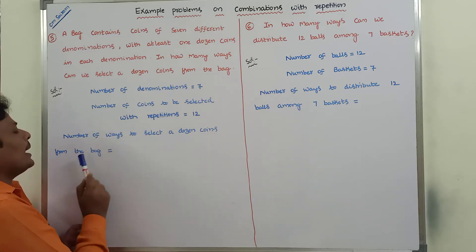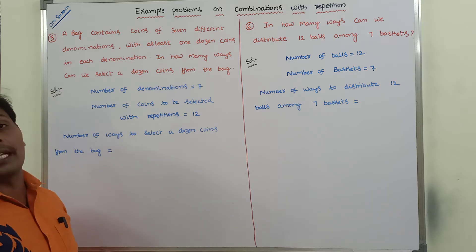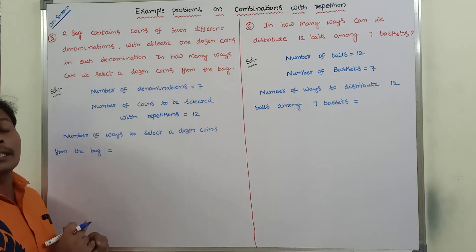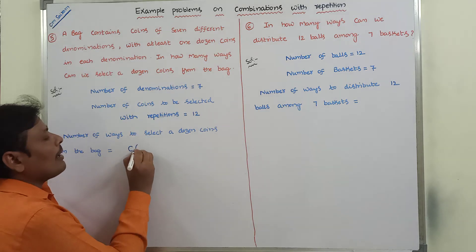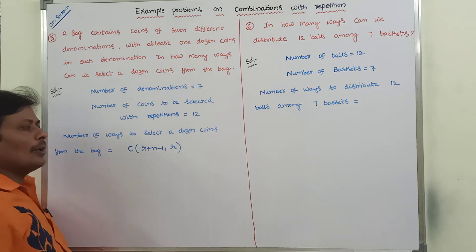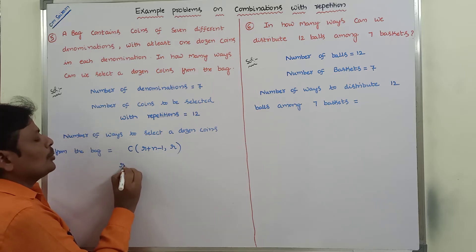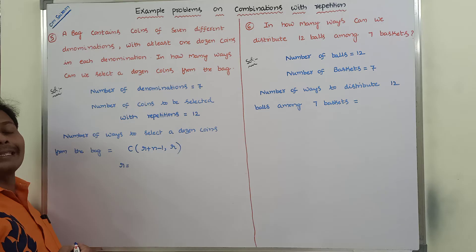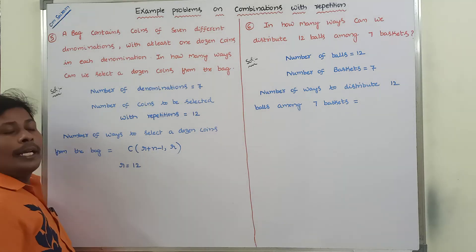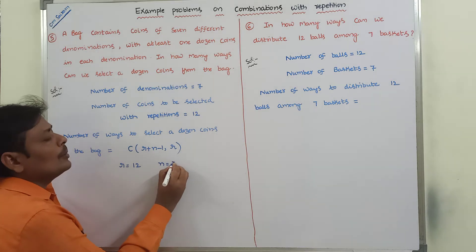Number of ways to select a dozen coins from the bag using combinations with repetition: the formula is C(n + r − 1, r), where r is equal to the number of coins to be selected with repetition, that is 12, and n is the number of denominations, that is 7.